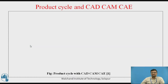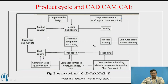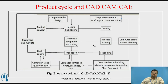Now we will move to the product cycle with CAD/CAM, where there will be the use of a computer-aided design system for the product concept and design engineering. There will be the use of computer-aided engineering softwares, 3D modeling softwares, and meshing softwares. After validating the 3D model and engineering analysis components, it will go to the drafting work, where there will be the use of computer-aided drafting.